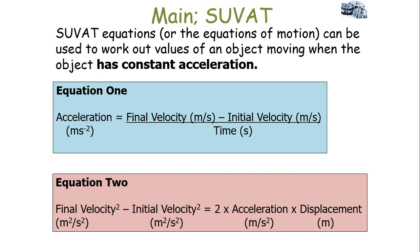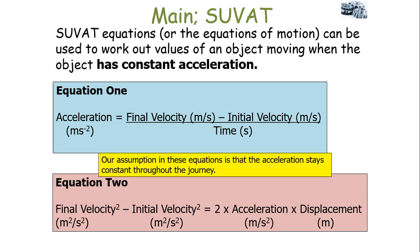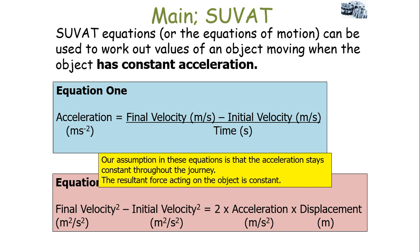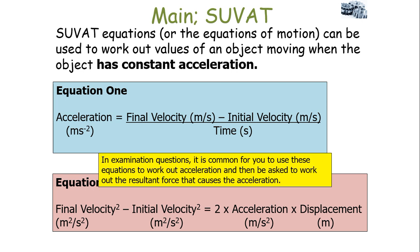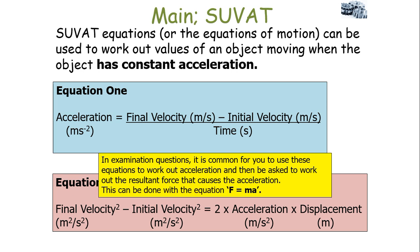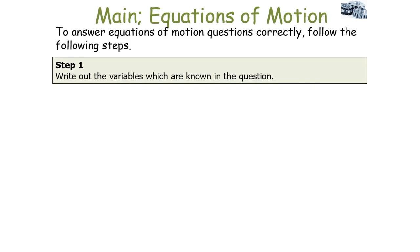Remember the conditions under which we can use these equations. Our assumption is that the acceleration stays constant throughout the journey — the resultant force acting on the object is constant. The most common example is free fall under gravity, where acceleration is given the term g and equals 9.81 metres per second squared. In exam questions it's common to use these equations to find acceleration, then be asked to find the resultant force using F equals MA.